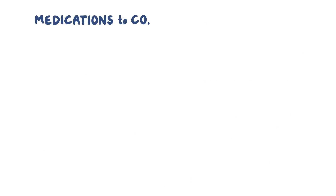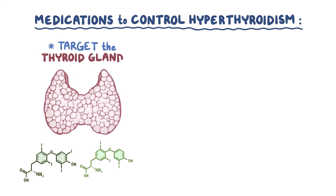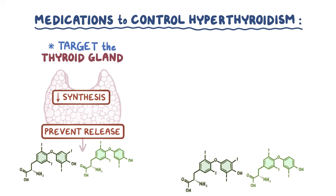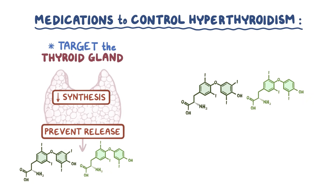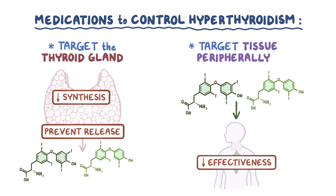There are several classes of medications to control hyperthyroidism. First, we can target the thyroid gland itself and either decrease the synthesis of thyroid hormones or prevent them from being released. The other option, at the target tissue peripherally, is to decrease the effectiveness of the thyroid hormones. This only manages the symptoms but doesn't treat the cause.